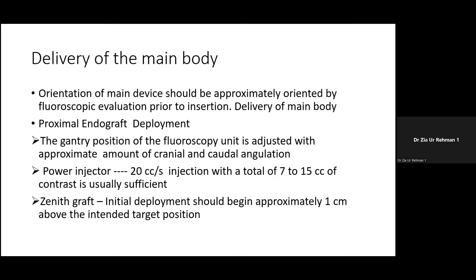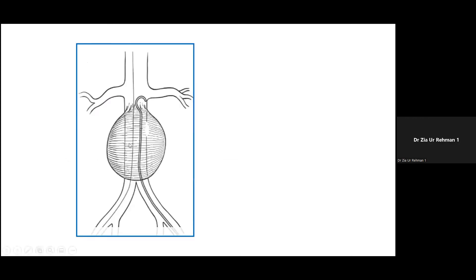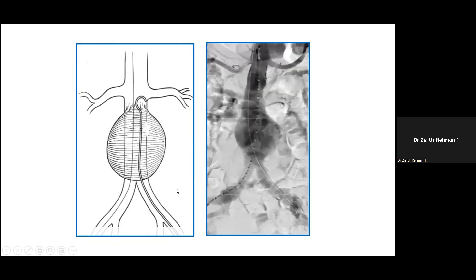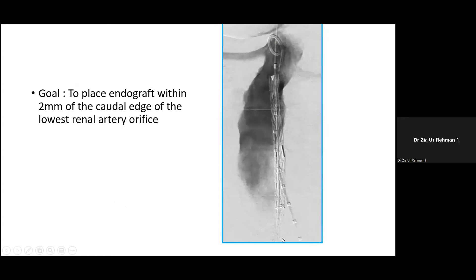It is good to use a pigtail catheter with radio-opaque markers. As shown in this angiogram done with the power injector, the super stiff guide wire and the pigtail catheter are visible along with the anatomy. The pigtail catheter is at the L1-L2 level; the left renal artery is typically the lower one shown here, and the right renal artery is above it. The main body is positioned accordingly.